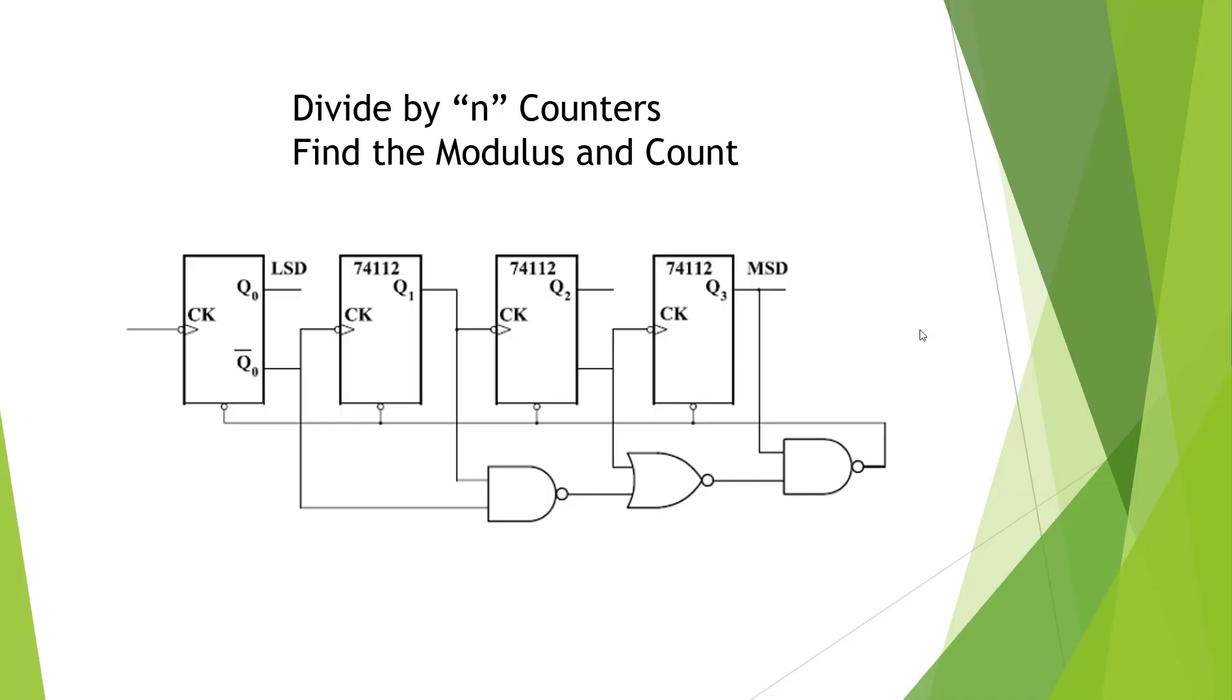Here we have a counter circuit and a decoder. Let's figure out what the modulus and the count is. First thing we need is our NAND gate. And we're going to need a zero out so that we could reset each one of our resets. So they all need to be connected.